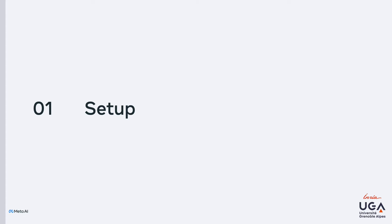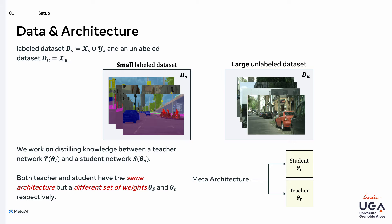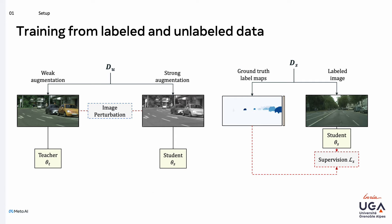Let's have a look at the setup of our problem. We assume that we have a small labeled dataset and a large unlabeled dataset. We also have two networks which are the teacher and the student. These networks have the same meta-architecture but have a different set of parameters, noted theta_t and theta_s respectively. The labeled dataset will be used in the standard manner to train either the teacher or the students. For the unlabeled images, two different augmentations are generated: a weak augmentation that will be fed to the teacher to generate pseudo-labels, and a strong augmentation that is fed to the students as additional training data.